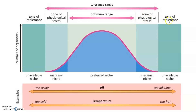We call that the zone of intolerance. The tolerance range spans from the point where some organisms survive all the way to the other end of the spectrum, but once zero percent are alive, that's where the tolerance range stops. The preferred niche is the optimum range — where organisms are mostly alive and doing their best.